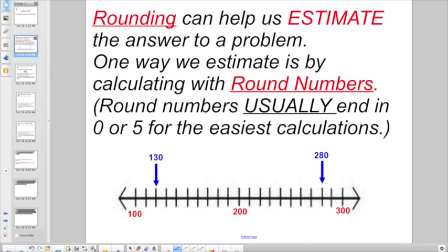So if we had something like this, with the number 130, we can think that it's closest to 100. So I'd want to use 100 if I was doing mental math. Or over here, 280, we can see is closest to 300. It's a whole lot easier to multiply by 300 in our heads than by 280, right? So we use estimated numbers when we want to get close to the exact answer.